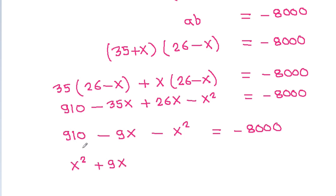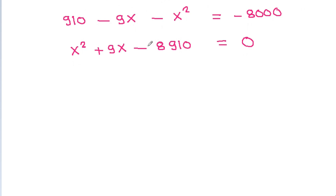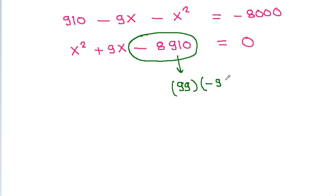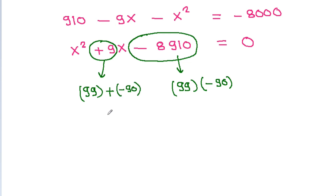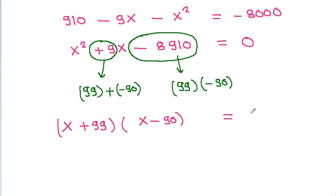Rearranging, x² plus 9x minus 8910 equals 0. And factoring minus 8910 gives 99 times minus 90 and minus 90 plus 99 equals 9, so the factors are (x + 99)(x − 90) equals 0.